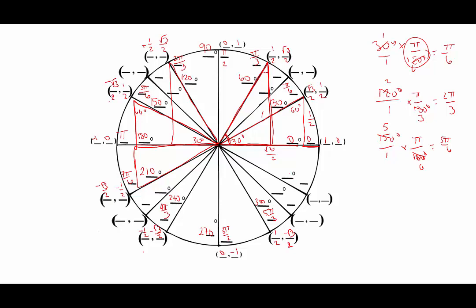Adding 30 more degrees brings us to 330 degrees, equivalent to 11pi/6. The triangle at the origin has a 30-degree angle. We're in quadrant 4 so x is positive — √3/2 — just like the 30-degree triangle, and y is negative 1/2.